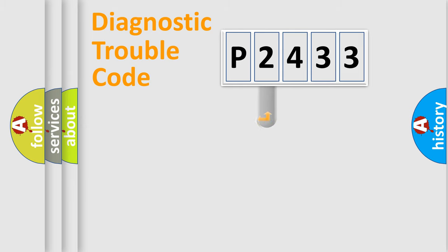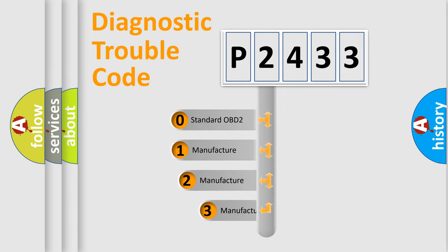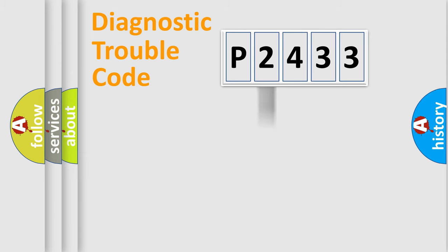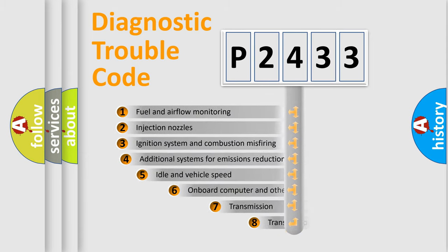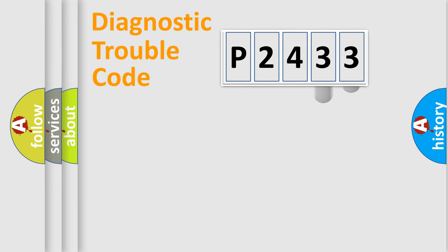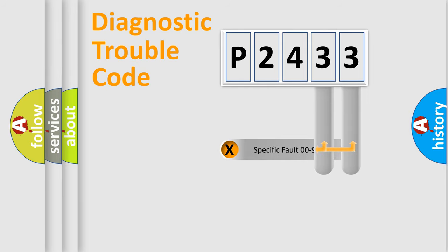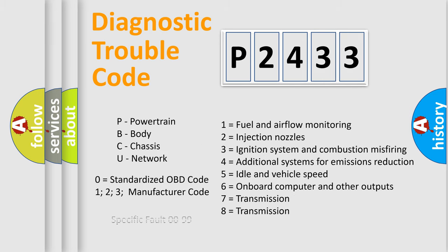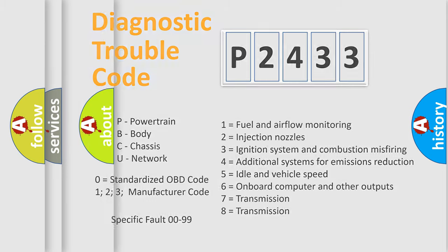This distribution is defined in the first character of the code. If the second character is expressed as zero, it is a standardized error. In the case of numbers 1, 2, or 3, it is a more manufacturer-specific expression of a car-specific error. The third character specifies a subset of errors. This distribution is valid only for the standardized DTC code, and only the last two characters define the specific fault of the group.